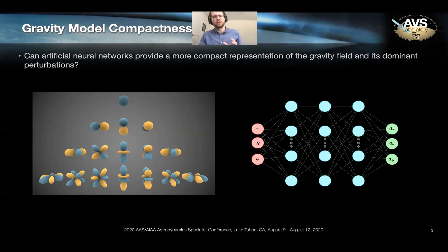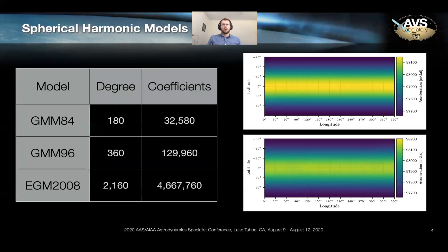So to answer that, let's first return to the spherical harmonic basis. Let's remind ourselves where we stand. So it seems about every 10 years there's an order of magnitude increase to the total number of coefficients used to model Earth's gravity field. We're now talking in the millions. And that begs the question, how much are we getting per coefficient?